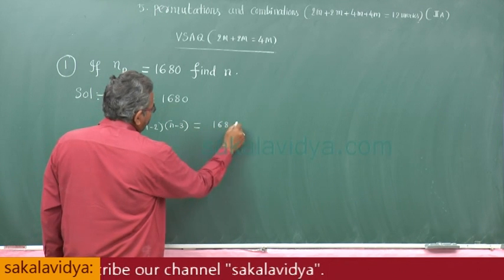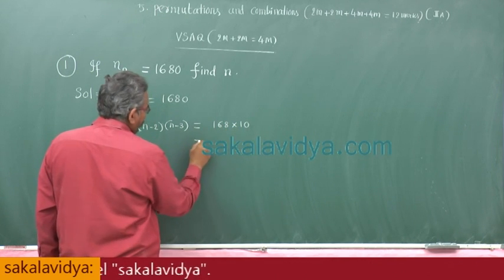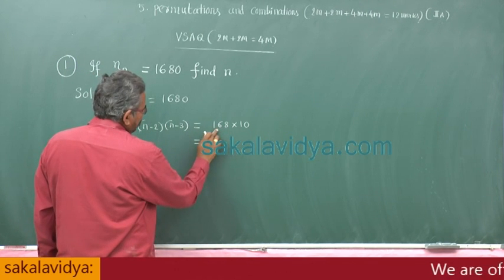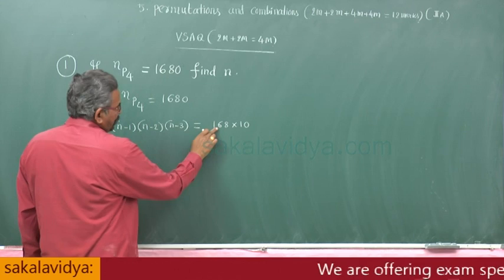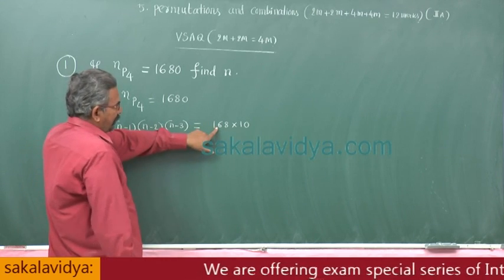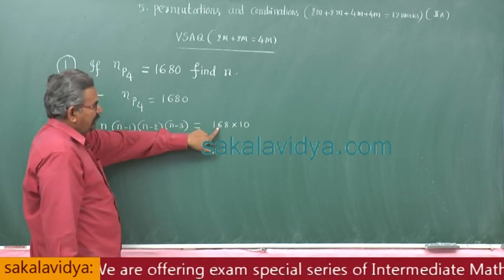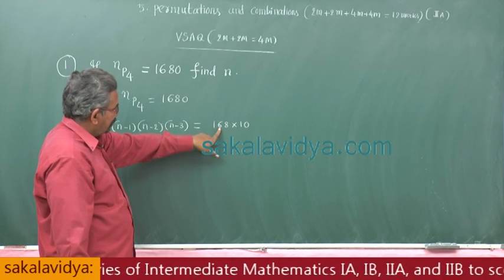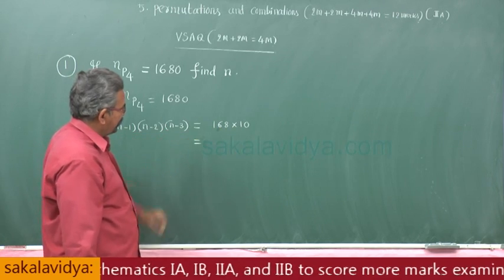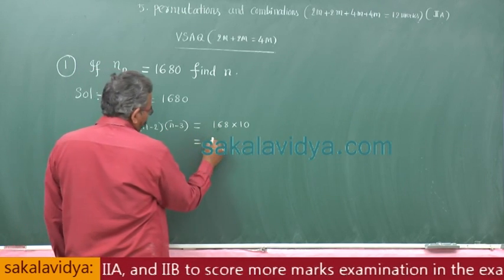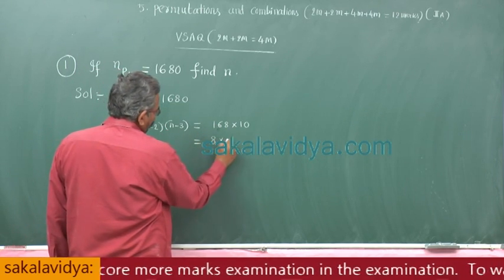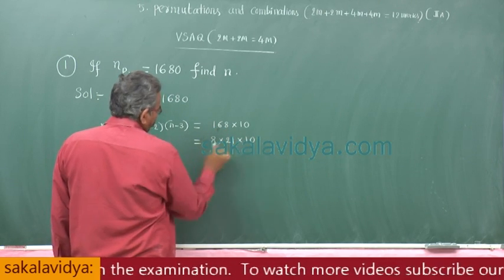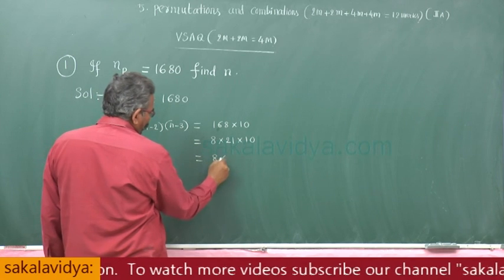We can write 168 into 10. Let us try 9... 9×1=9, 9×2=18, 9×1=9, means here 16 minus 9 is how much? 7. Better you try 8 also, no problem. 8 into 21. 8×2=16 into 10. This 8 into 21 can be written as 7 into 3 into 10.